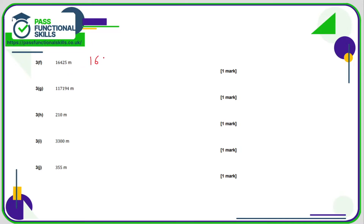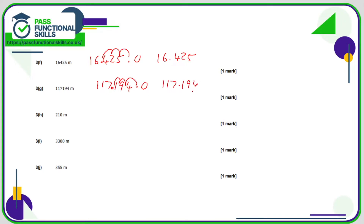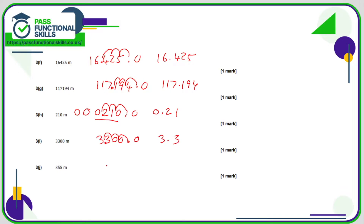16,425 is 16425.0 — move the decimal point three positions to get 16.425. 117,194.0 — move three positions to get 117.194. 210 is 210.0 — put some zeros in front and that's 0.21. 3300.0 — move the decimal point three positions to make it 3.3. And 355 metres is 355.0 — put zeros in front and we get 0.355.